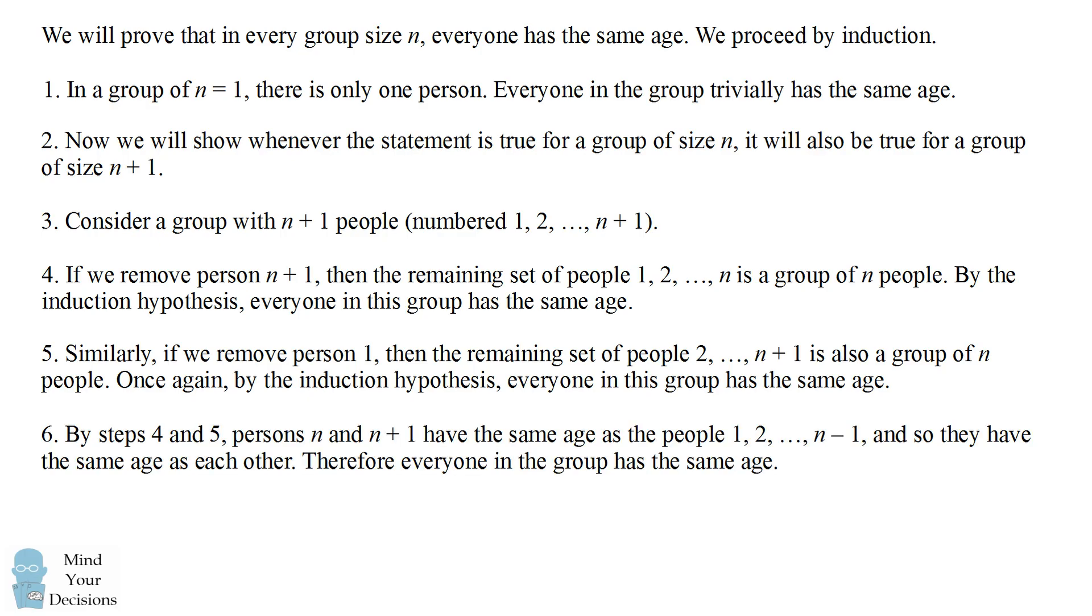By steps 4 and 5, persons n and n plus 1 have the same age as everyone else in the group numbered from 1 to n minus 1. And therefore, they have the same age as each other. This means everyone in the group has the same age. By induction, we have proved everyone has the same age for groups of any size. Therefore, everyone in the world has the same age.